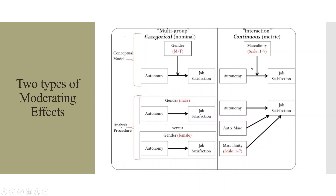Now let's talk about another scenario: autonomy affecting job satisfaction, and this relationship is moderated by masculinity. Masculinity is captured on a scale of 1 to 7, so it is a continuous, metric variable. Here we cannot use multi-group analysis, so instead we introduce an interaction term — a product of autonomy and masculinity — and check its effect on job satisfaction. If the variable is categorical like gender, we do multi-group analysis. If it is continuous like masculinity, we go for interaction effects.